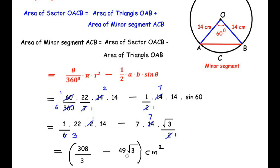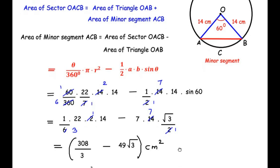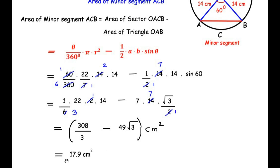So the area of minor segment ACB is 308/3 − 49√3 centimeters square. If you know the value of √3 ≈ 1.73, you can simplify this to approximately 17.9 centimeters square. Note that since the value of √3 is not mentioned in the question, it is absolutely fine to stop your answer at the exact form 308/3 − 49√3.